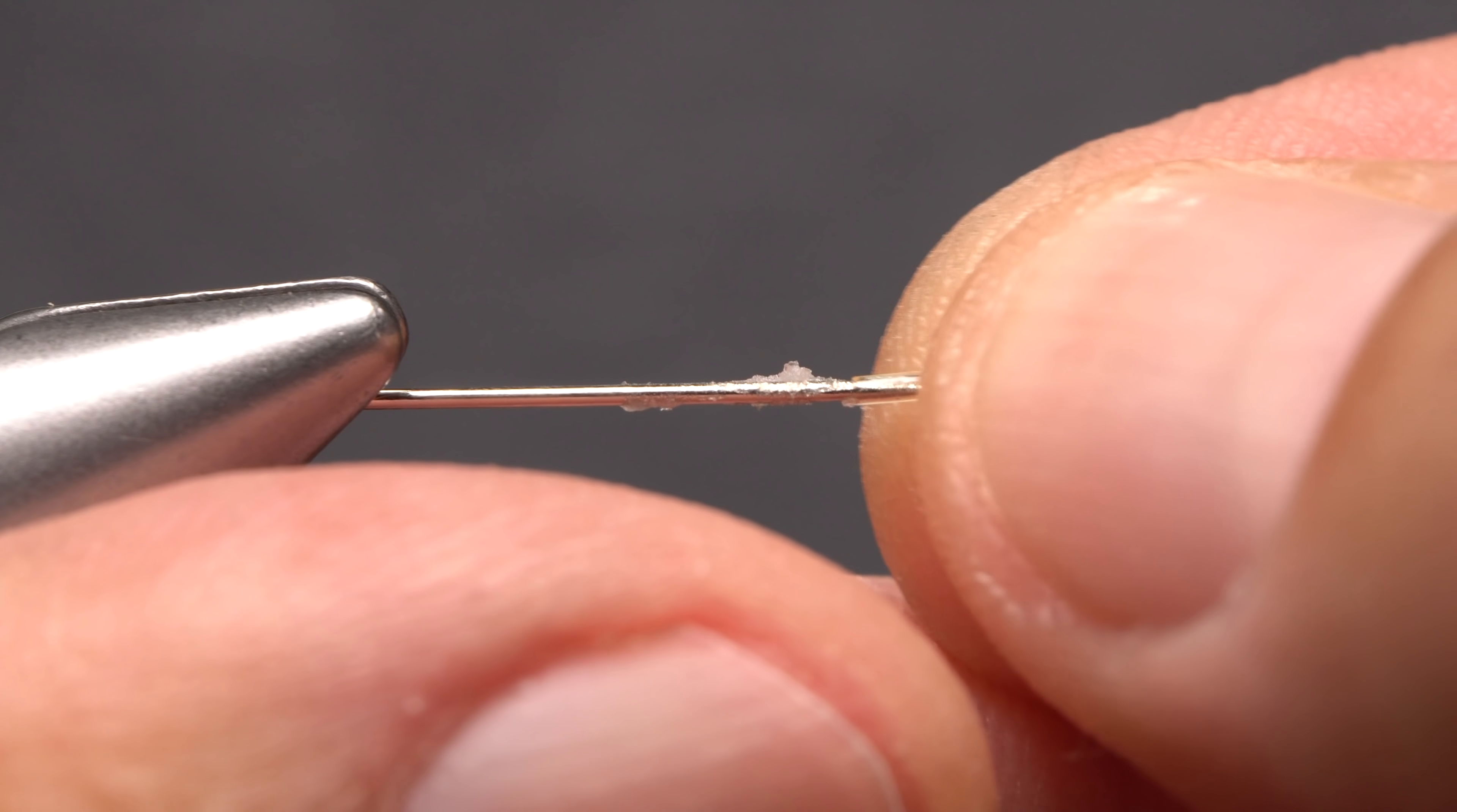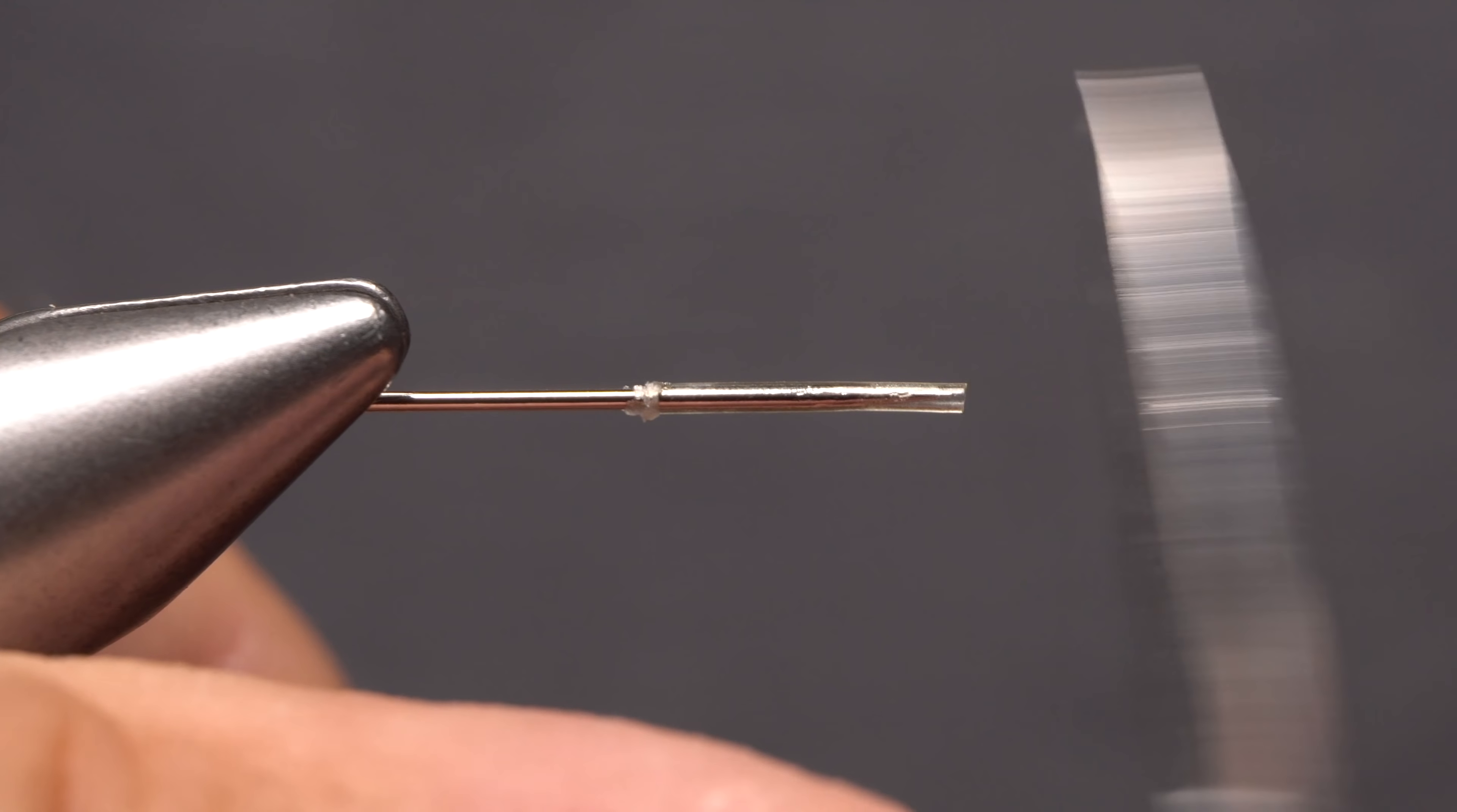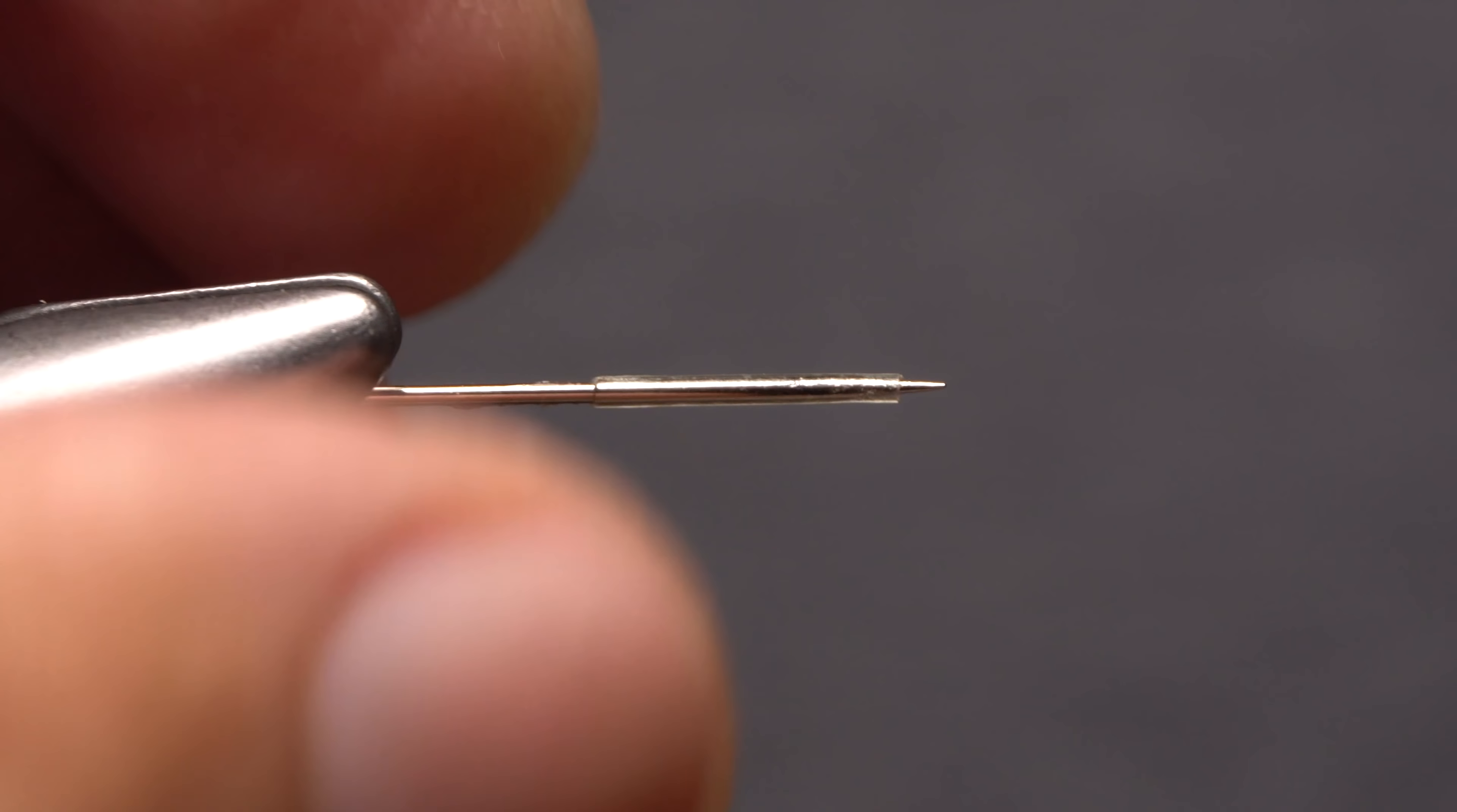Slide one end of the tubing over the needle. The small size takes a good bit of effort. With about a half inch of tubing on the needle, snip the remainder off at the needle's point. Continue slipping the tubing onto the needle until just the point is exposed.